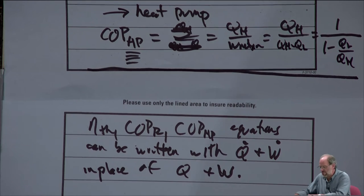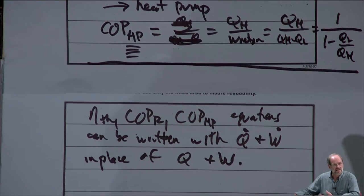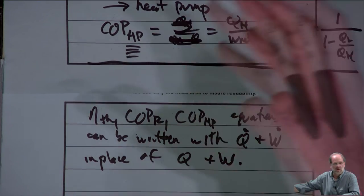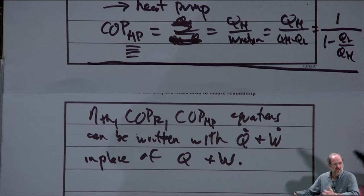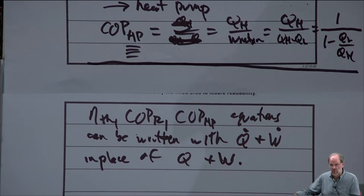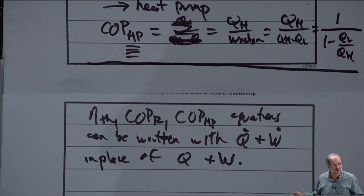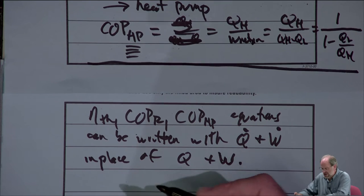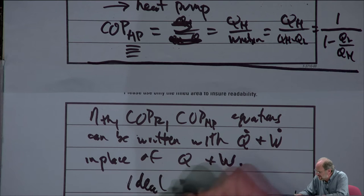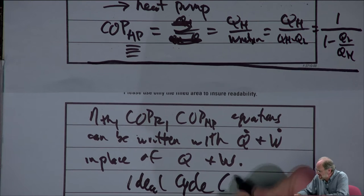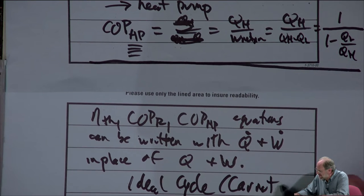Now we move on and talk about the ideal cycle. We have the equations to determine the performance of the heat engine or the refrigeration cycle. Now we need to look at what is the best possible value of efficiency or coefficient of performance so we can see if the second law has been satisfied. The way we do that is by comparison to the ideal cycle, also called the Carnot cycle.